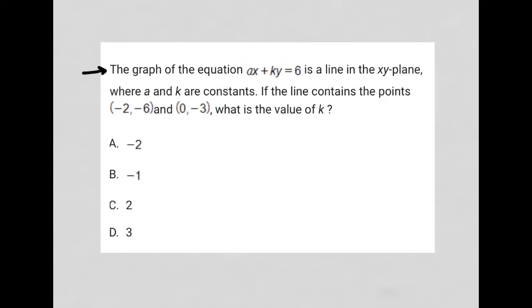This question says the graph of the equation AX plus KY equals 6 is a line in the XY plane. Anytime a question on the digital SAT tells me about the equation of a line, I am always going to think about that equation through the structure of the slope-intercept form, which is Y equals MX plus B. What I notice is that the equation provided is not in the Y equals MX plus B structure, so I'm going to convert it into that form.